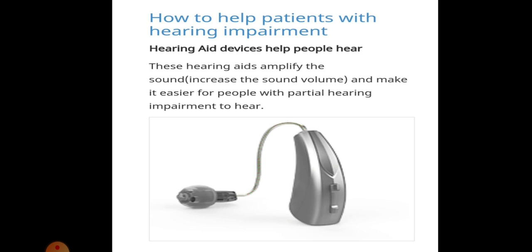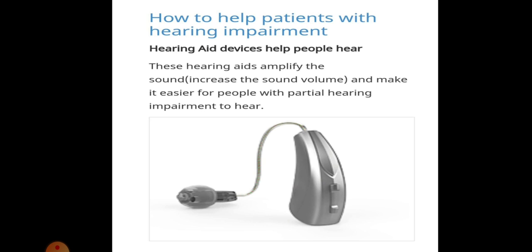How can we help patients with hearing impairment? A hearing aid device helps people hear. This hearing aid amplifies the sound, increases the volume, and makes it easier for people with partial hearing impairment to hear. It is used for those who cannot hear clearly or cannot hear soft sounds — the device increases the volume of sound to help people with partial hearing impairment.